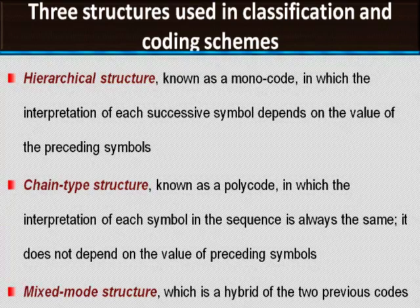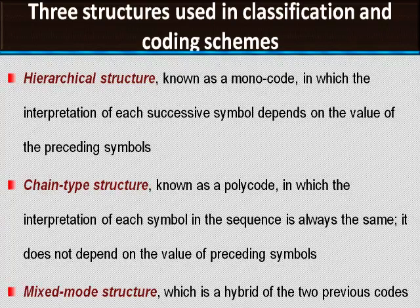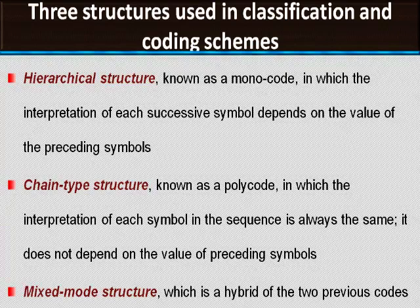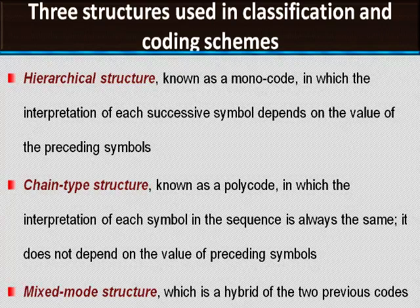For classification and coding schemes, there are three kinds of coding structures in use. One is the hierarchical coding structure, the second is the chain type coding structure, and the third is the mixed code structure. The hierarchical structure, known as monocode, is one in which the interpretation of each successive symbol depends on the value of preceding symbols. If a code is 1, 2, 3, the meaning of 3 depends upon 2, and the meaning of 2 and 3 depends on 1. A lot of information can be embedded in a simple code — that is one advantage.